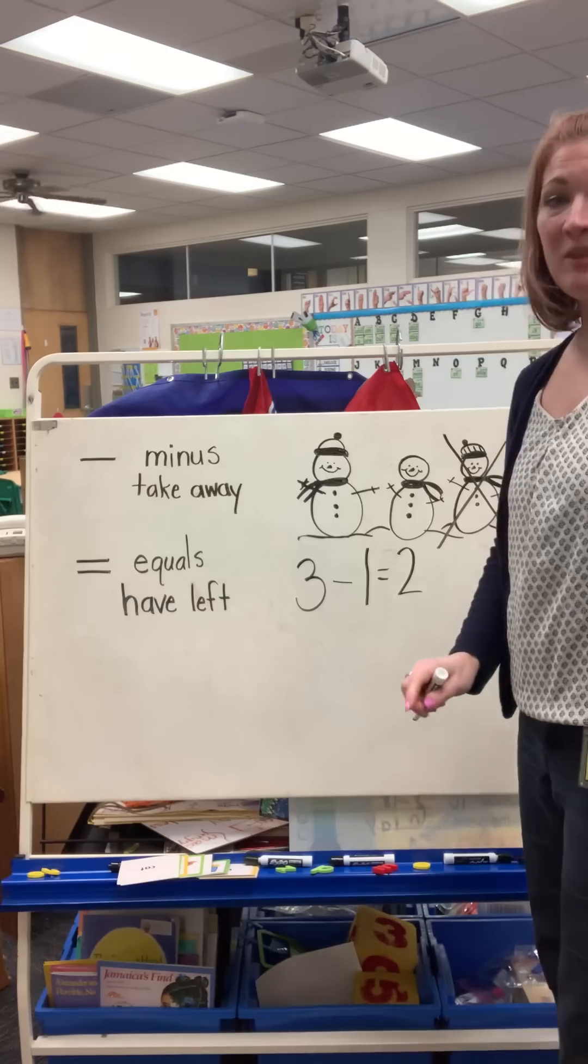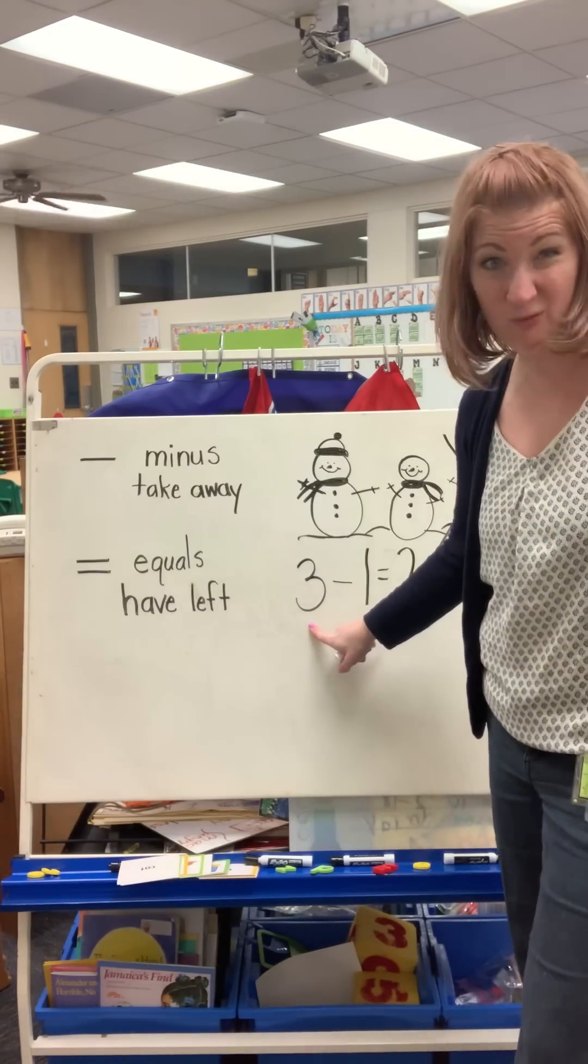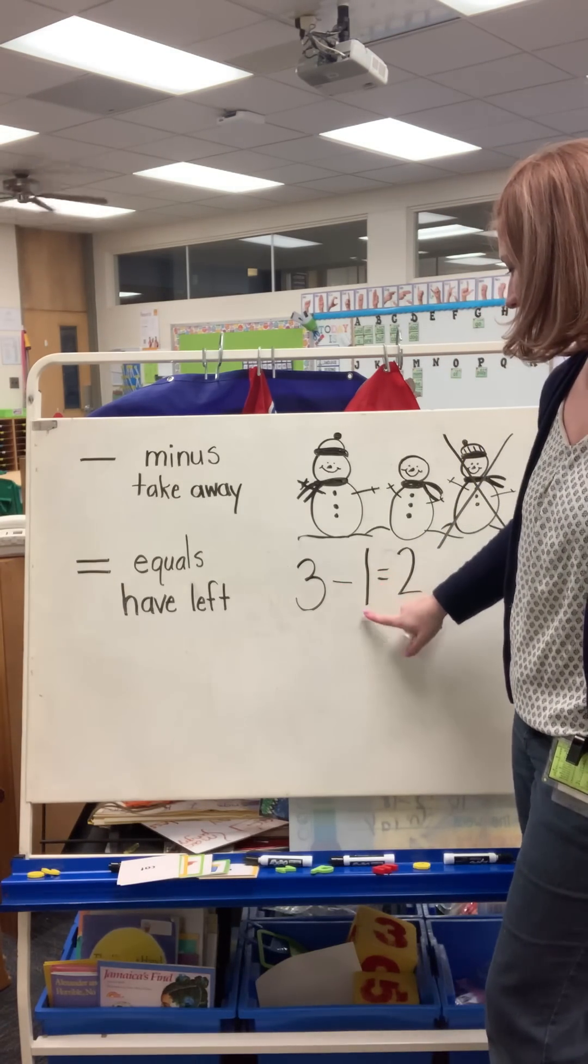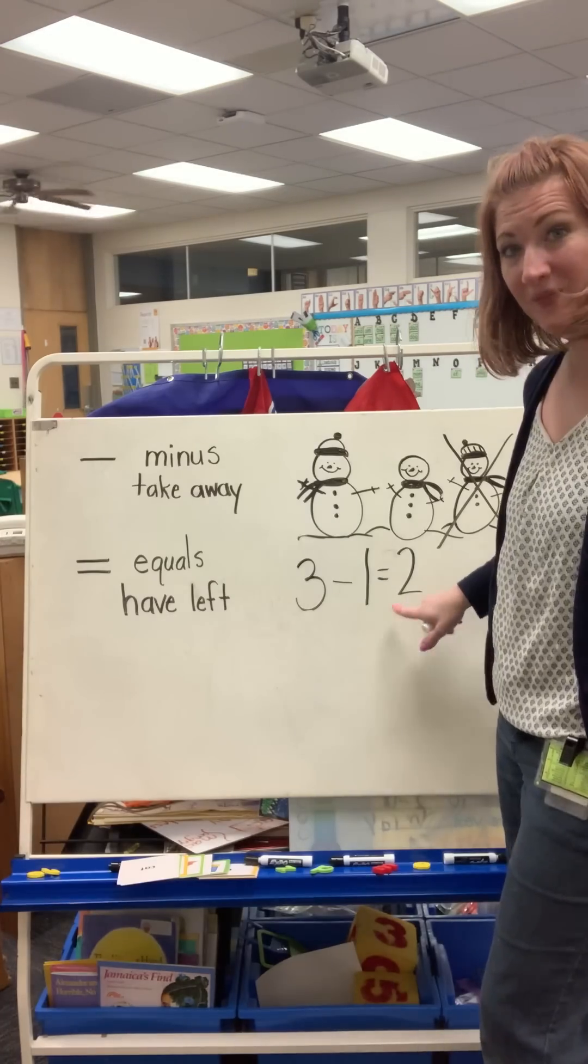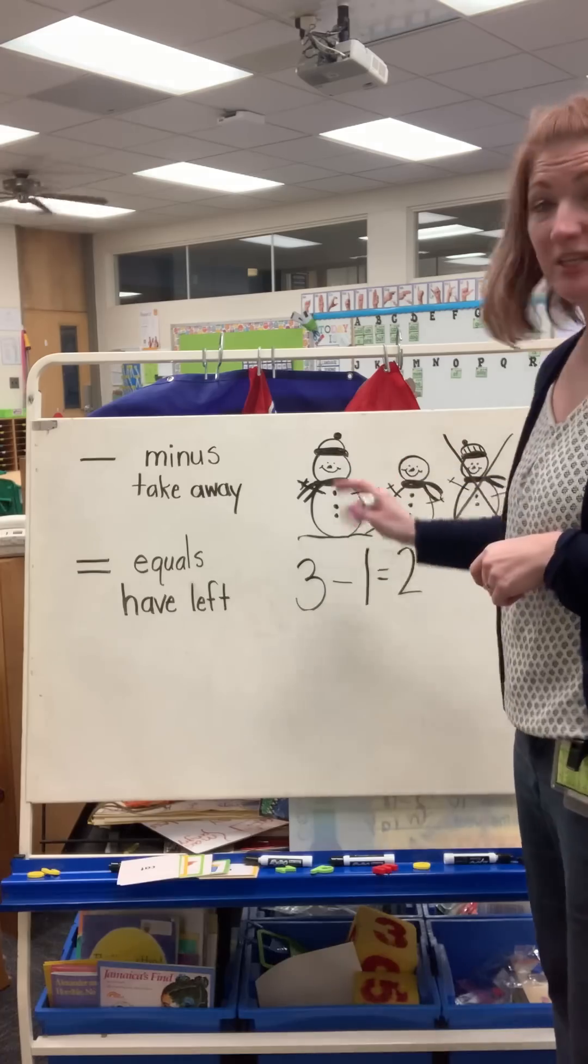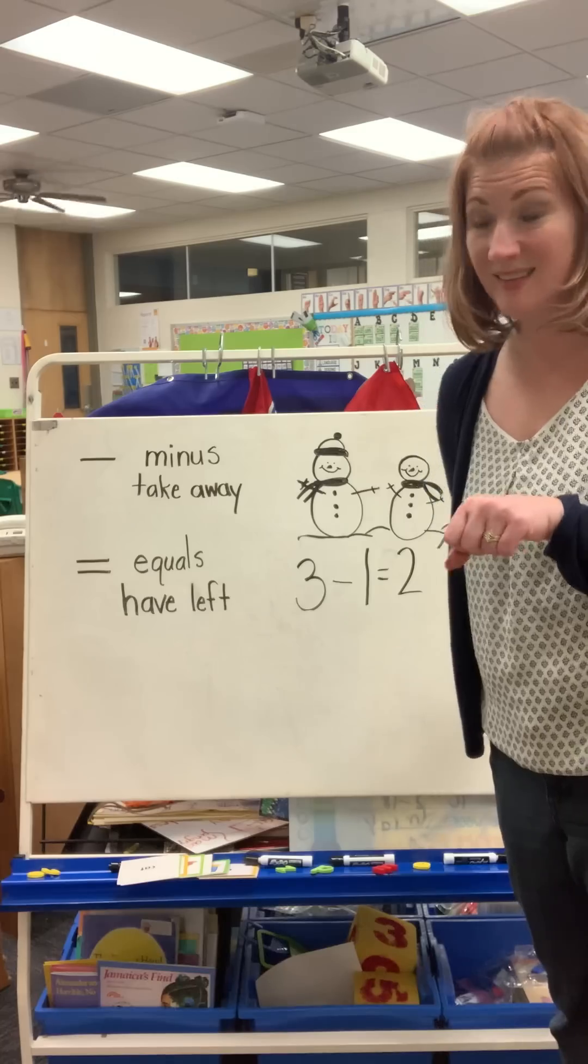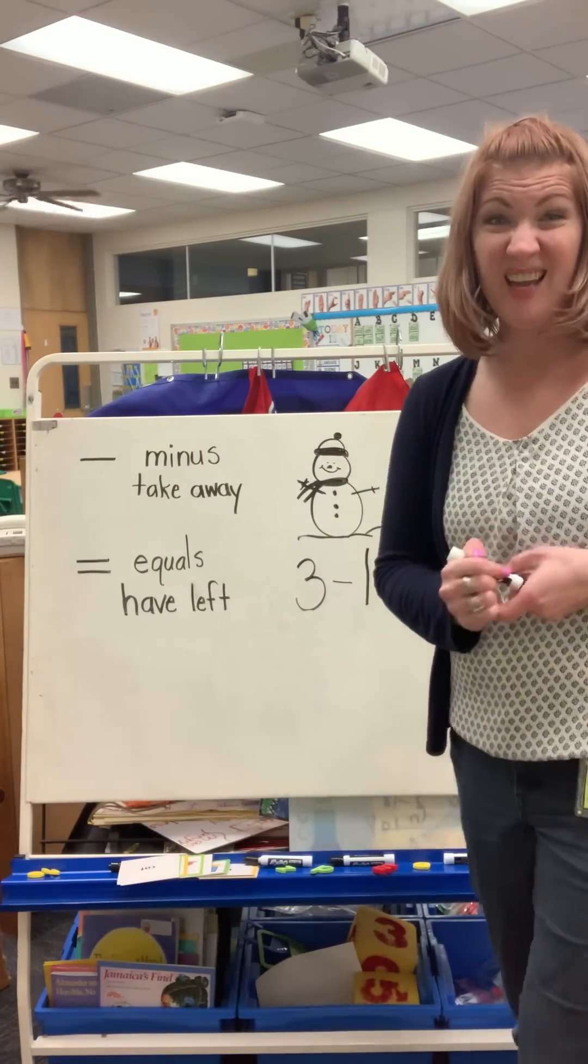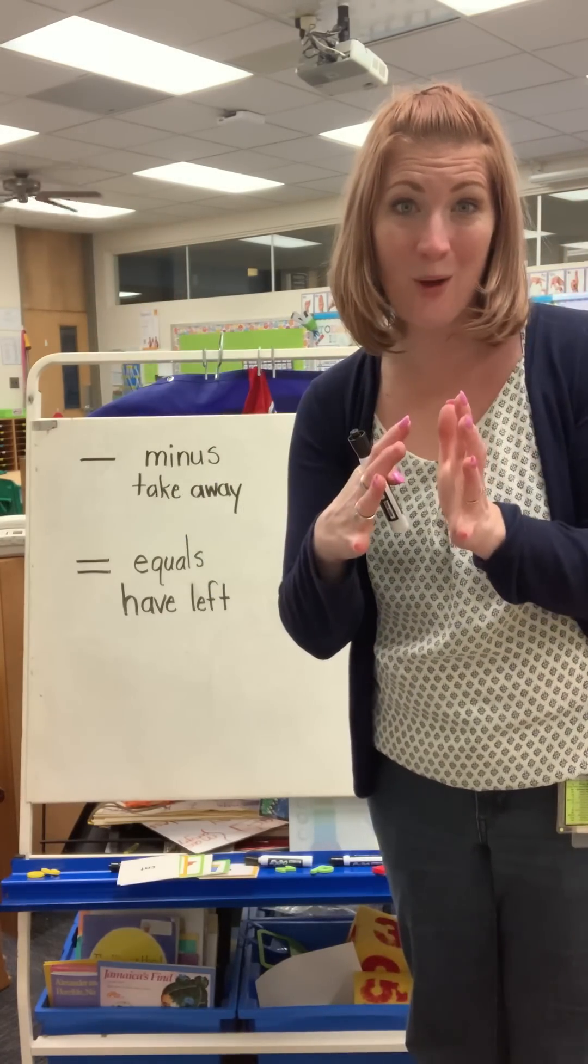So my math problem, the equation, that's a big fancy name for the numbers. The number sentence is three minus one equals two. It's showing that I had three snowmen to start off with. One went away. Now I have two. When we subtract, we get smaller.